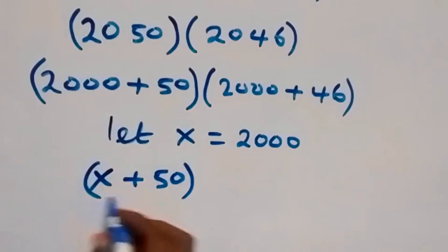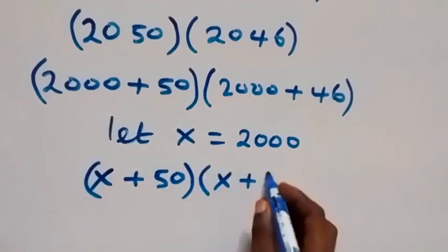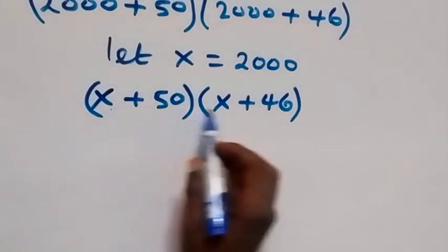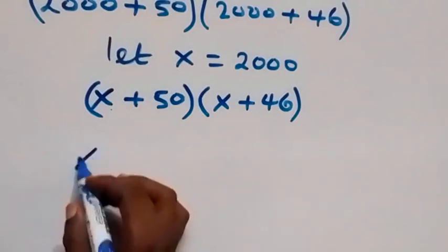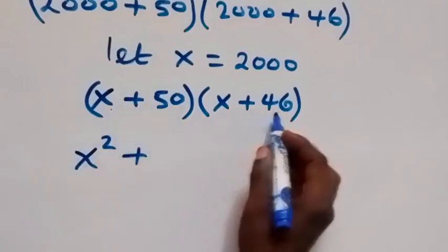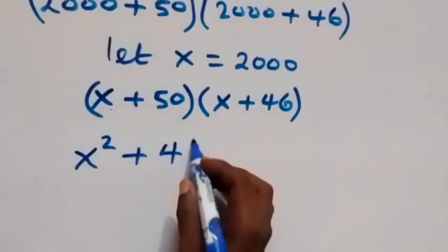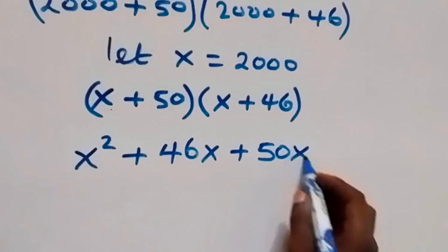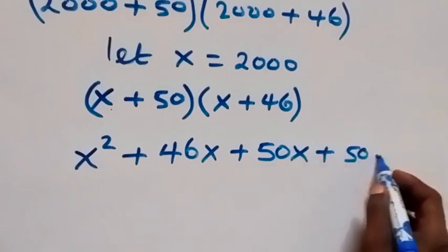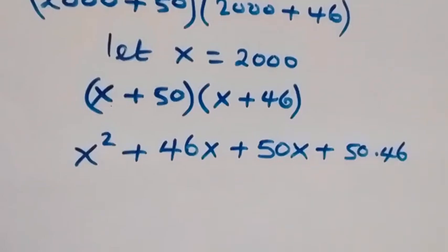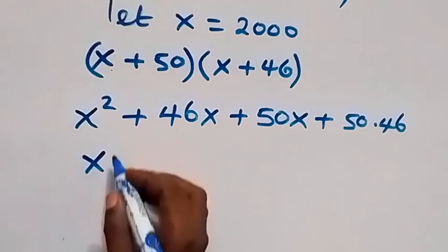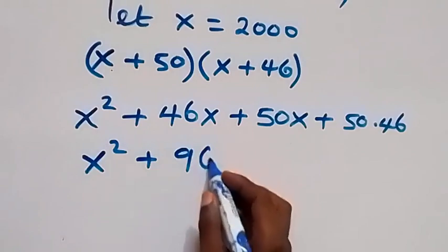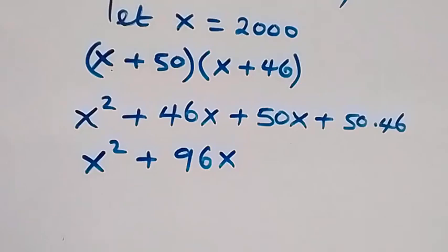From here, we can rewrite this and it becomes x plus 50, multiplied by x plus 46. Then we expand this bracket: x times x gives x squared, plus x times 46 gives 46x, plus 50 times x gives 50x, plus 50 times 46. When we simplify, we have x squared plus 96x, and 50 times 46 gives us 2300.